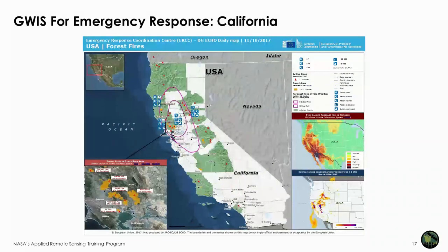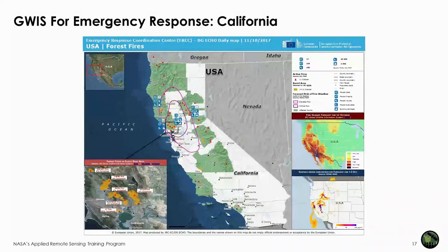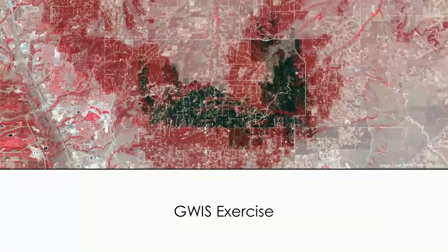This is especially important for fire managers on the ground when making tactical decisions for their firefighters. Here is a final example from the recent devastating fires that occurred north of San Francisco, California. These fires burned in the Napa Valley wine region and into urban areas of Santa Rosa, destroying many homes. Again, you can see the fire danger forecast for the next day to help prepare managers on the ground. Next, Amber McCollum will do a short demonstration on the use of GWIS.